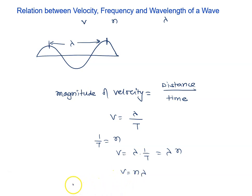Where v is known as the wave velocity, n is known as frequency, and lambda is known as wavelength. This formula v equals n lambda can be applied to all types of waves, either transverse wave or longitudinal wave.